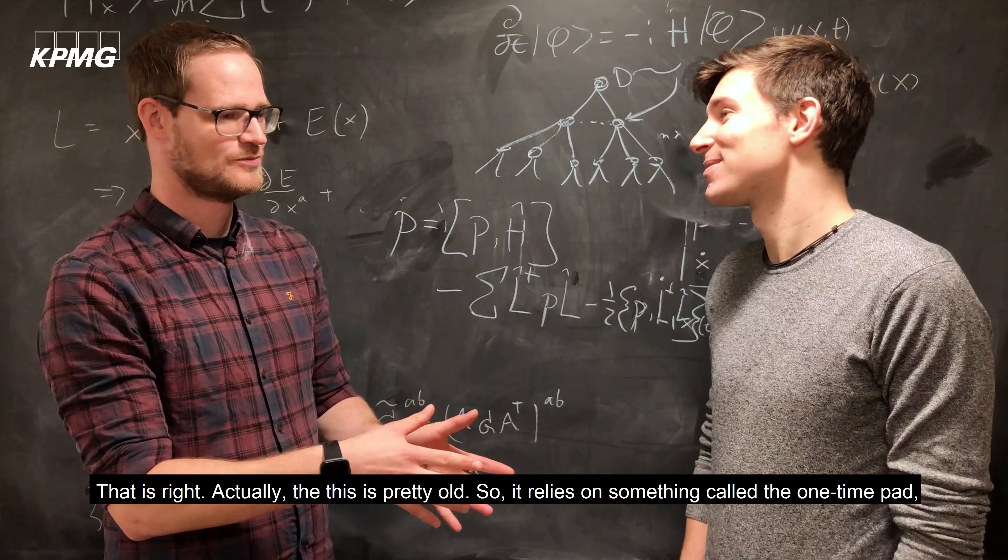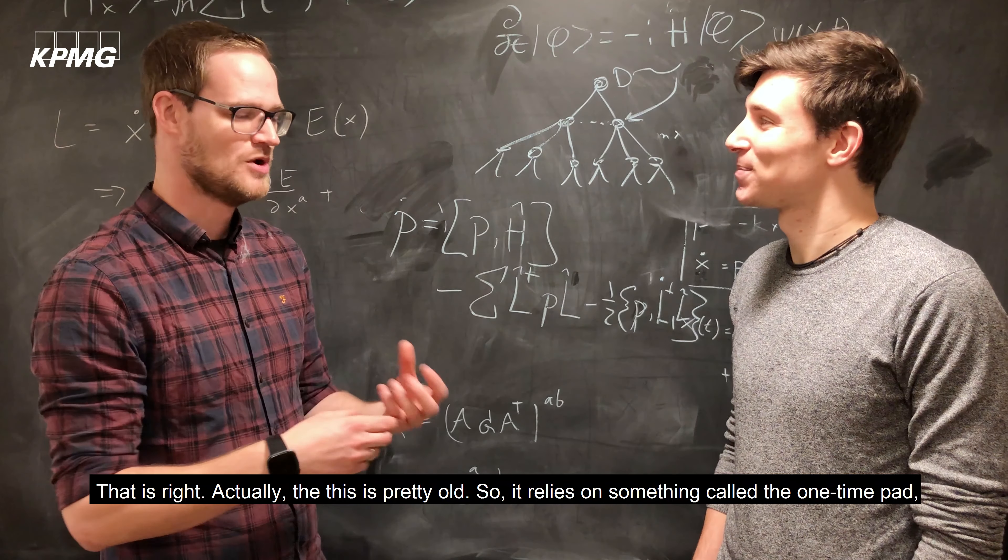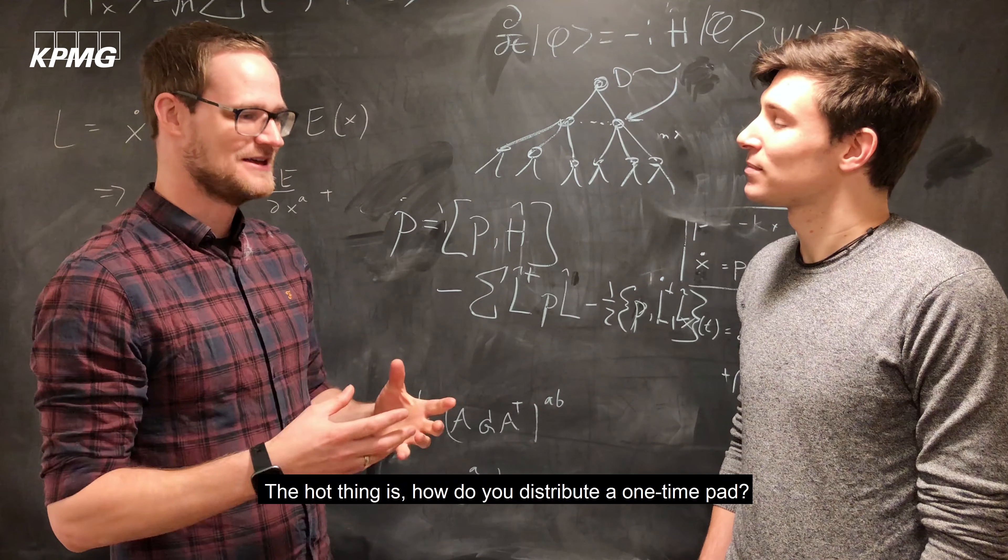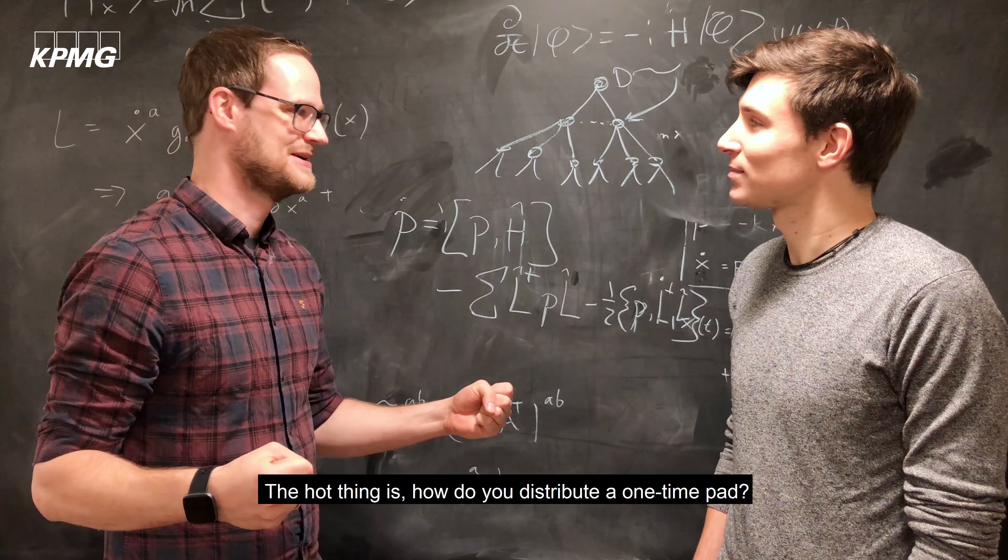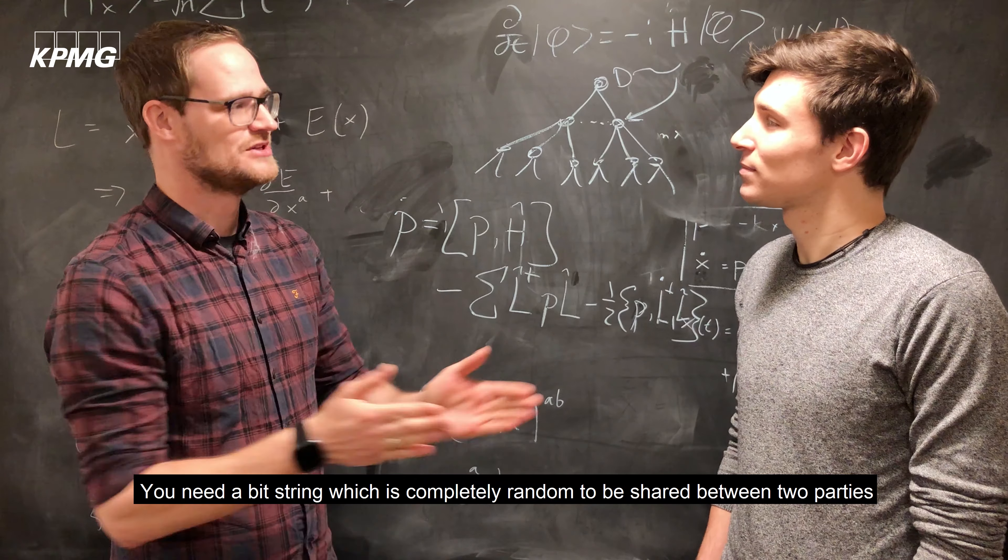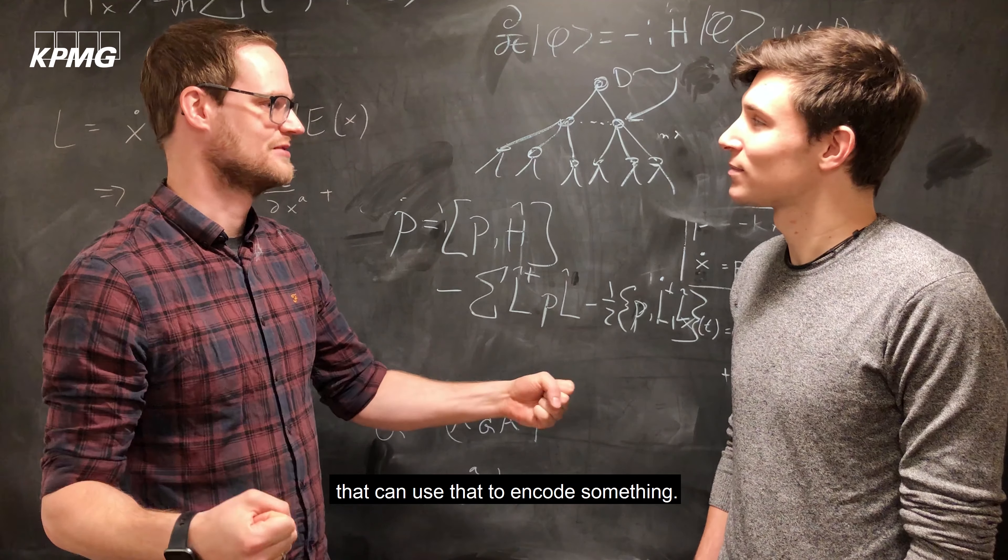That's right, actually the math is pretty old. It relies on something called the one-time pad, which has been known for many years. The hard thing is how to distribute a one-time pad. You need a bit string which is completely random to be shared between two parties and they can use that to encode something.